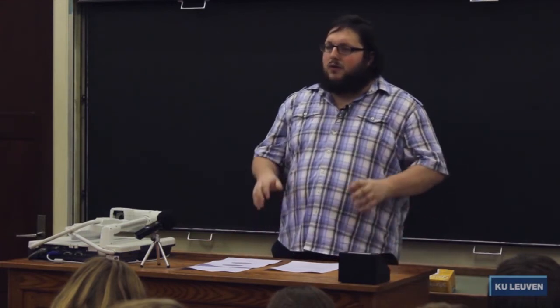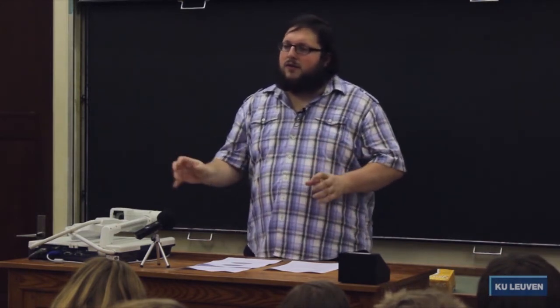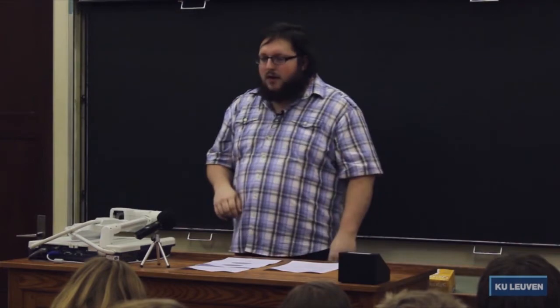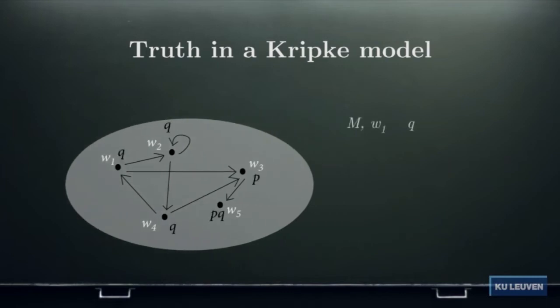We can now use this Kripke model to determine whether formulas, no matter how complex, are true at a certain possible world. For example, is the formula Q true at W1? Sure — Q is true because it's made true by the valuation. But we can also ask: is Q necessarily true at W1? In other words, is the formula box Q true at W1?